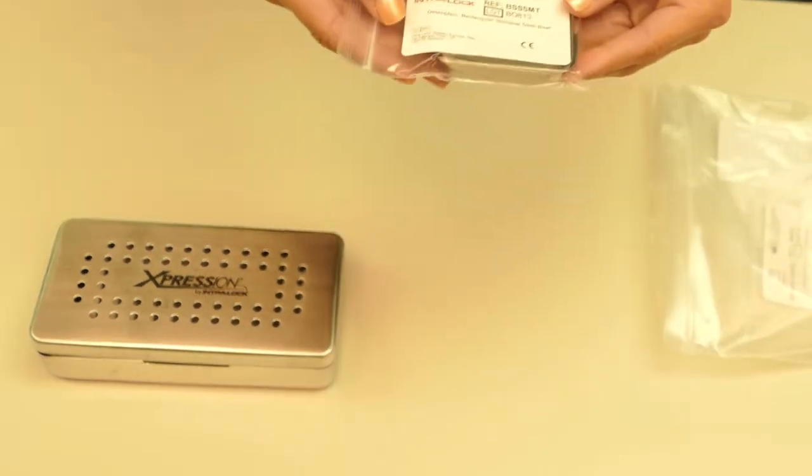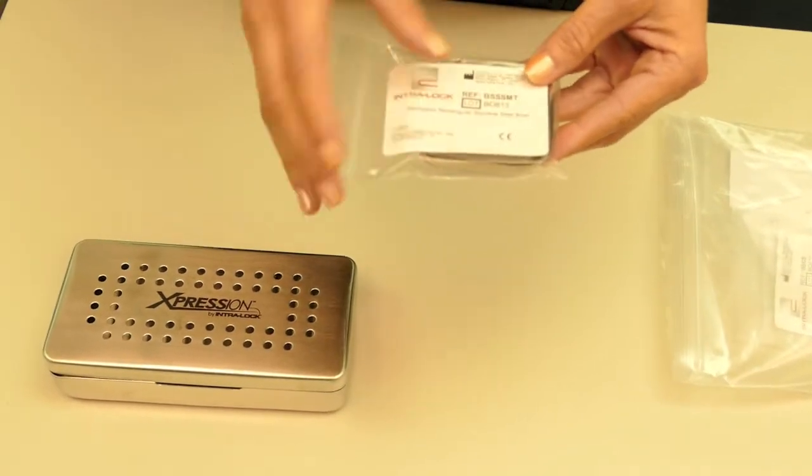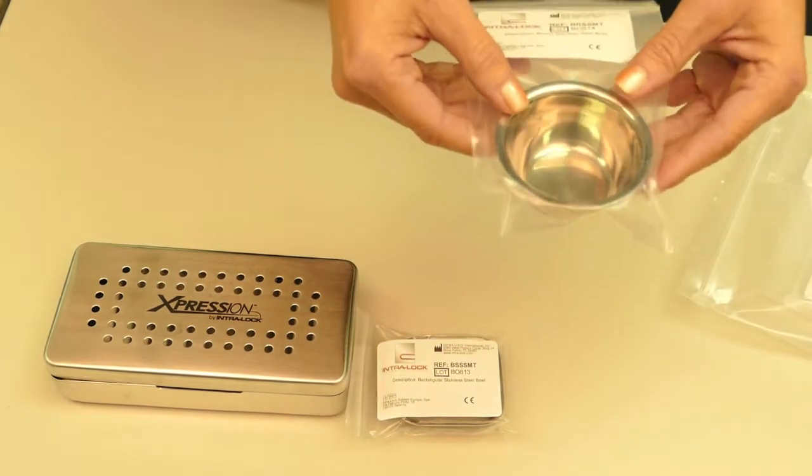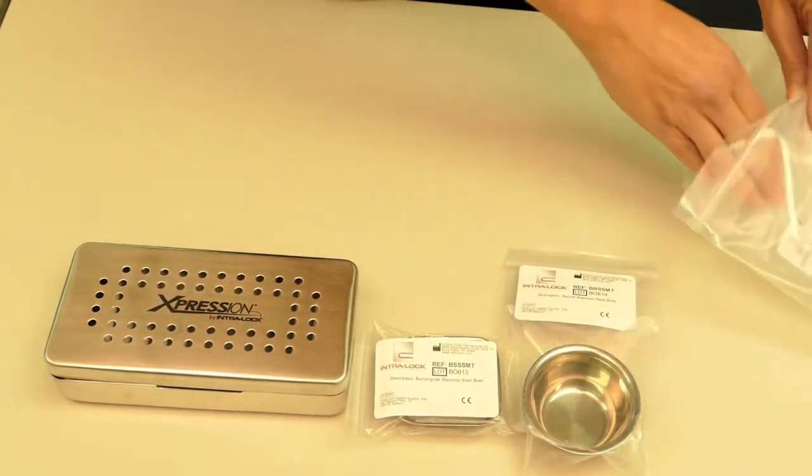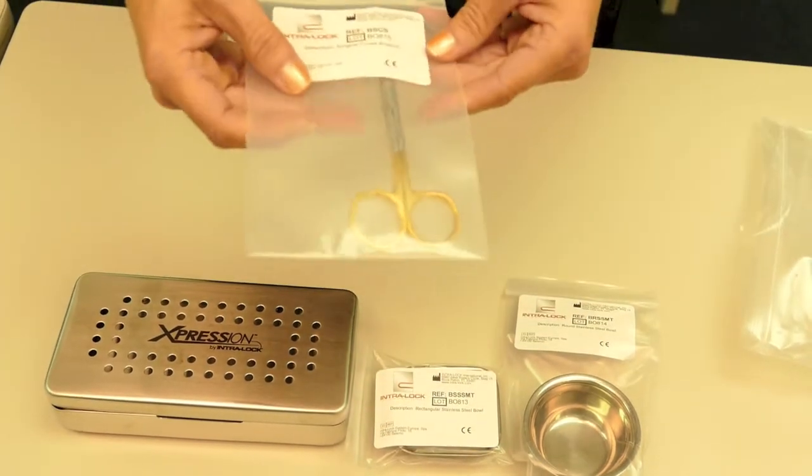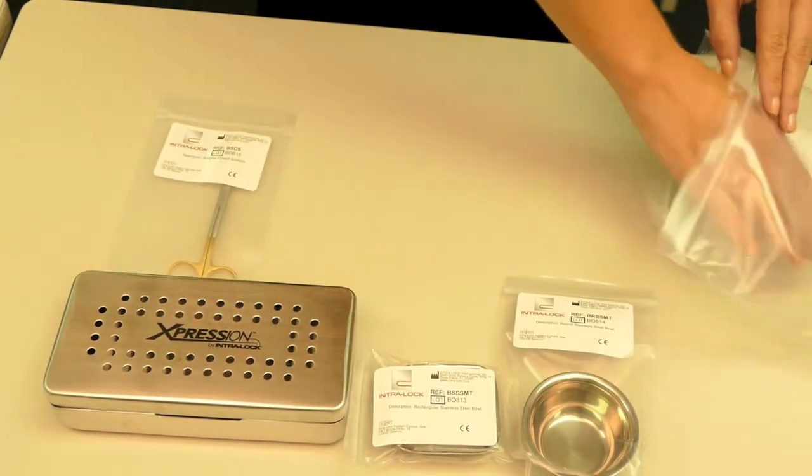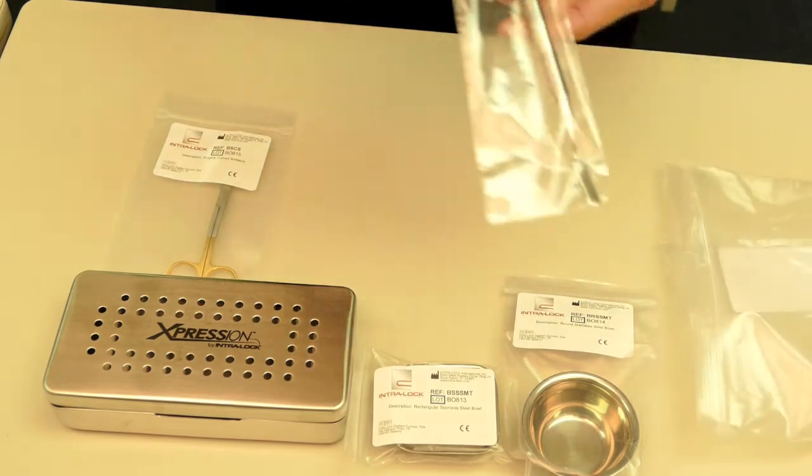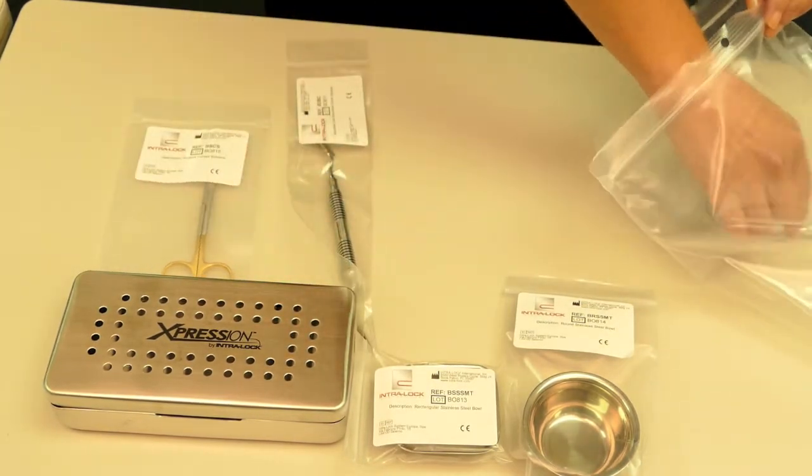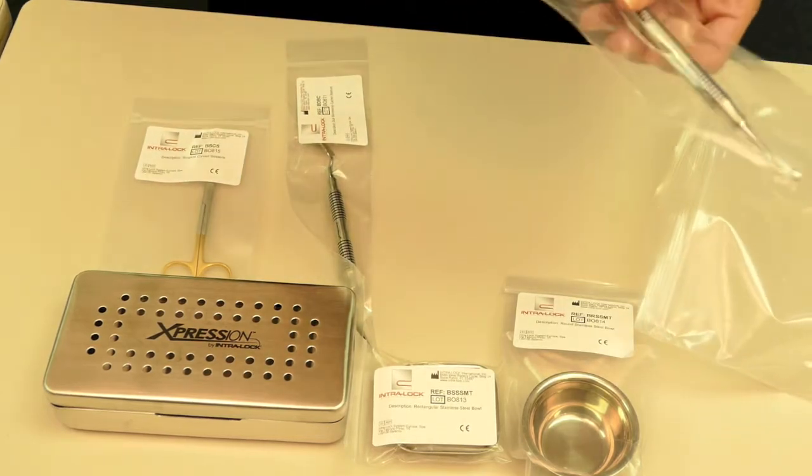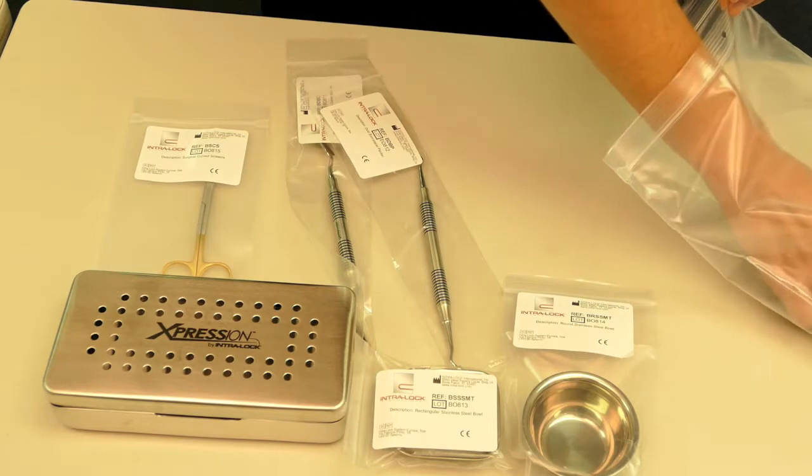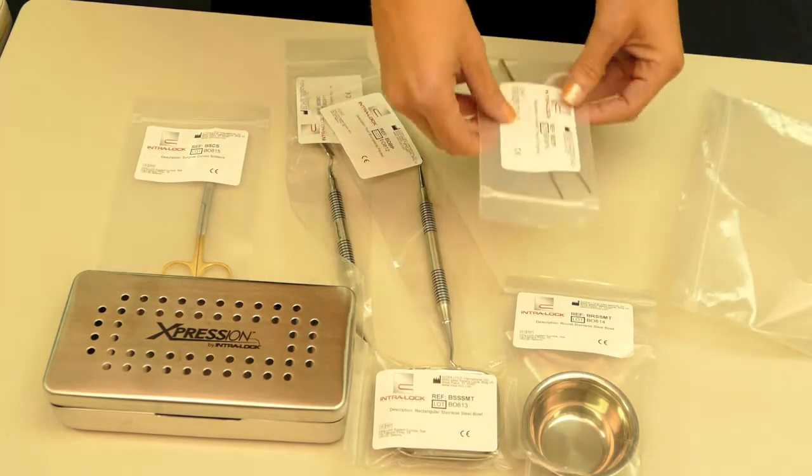Next, you have your rectangular stainless steel bowl, your circular stainless steel bowl, your surgical curved scissors, your dual biomaterial carrier spatula, your dual biomaterial packer, and your surgical tissue forceps.